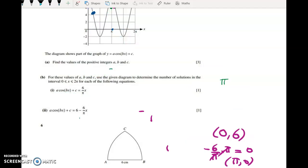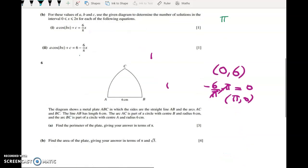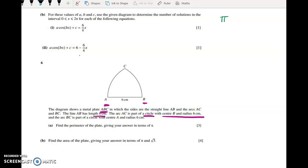As soon as you see that, you're guessing you're probably going to have to find the area and the perimeter. And that's in fact what you have to do here. We've got a metal plate ABC. The sides are this straight line AB, and then the sides are two arcs. The side AB is obviously six centimeters.